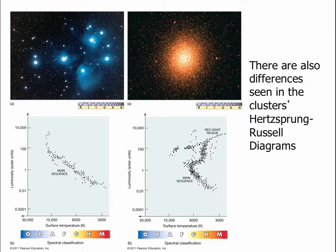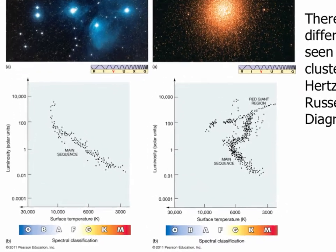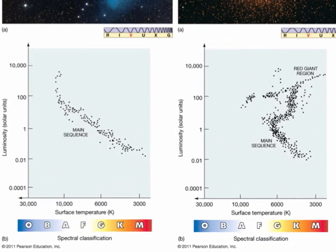If we look at the Hertzsprung-Russell diagrams for these stars, on the left we have the open cluster the Pleiades — just a handful of bright stars. The HR diagram shows bright blue stars, faint red stars, and all the stars in between. There are no red giants here, and there is only one white dwarf, which isn't even on this plot.